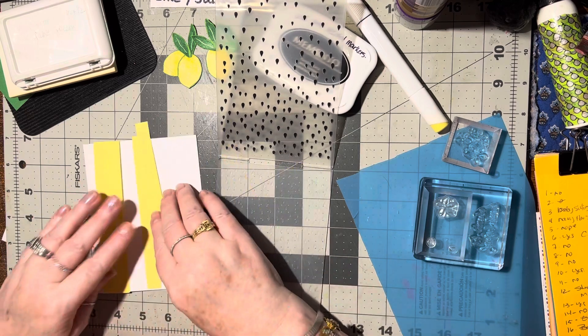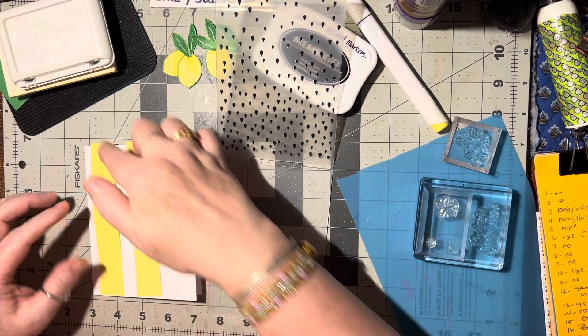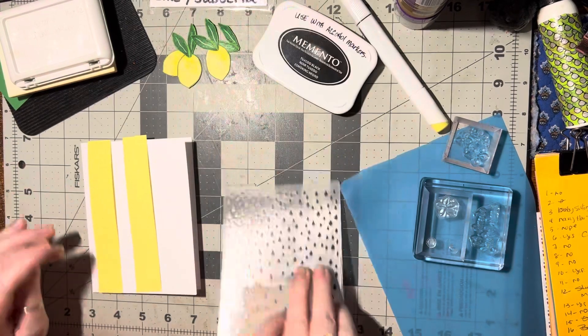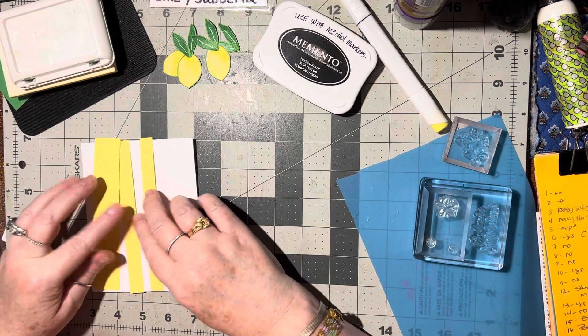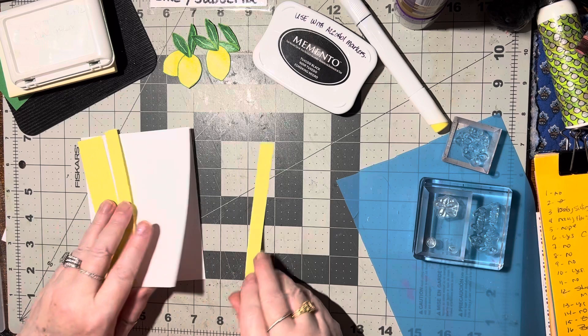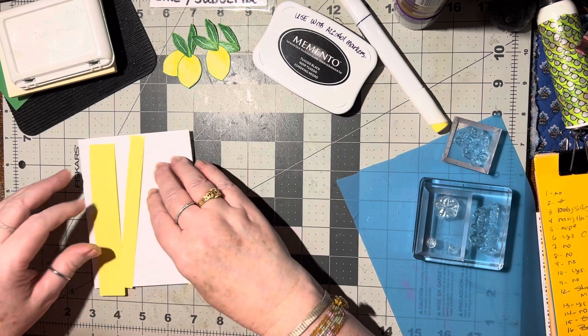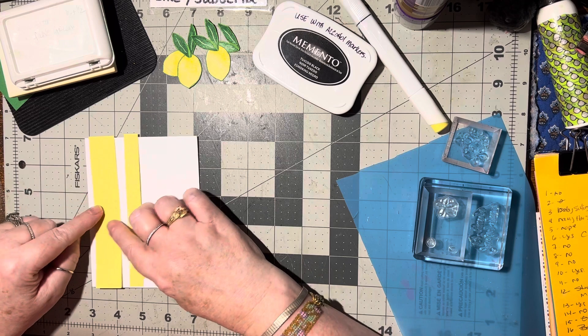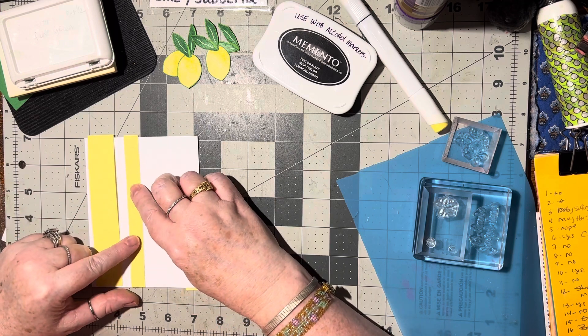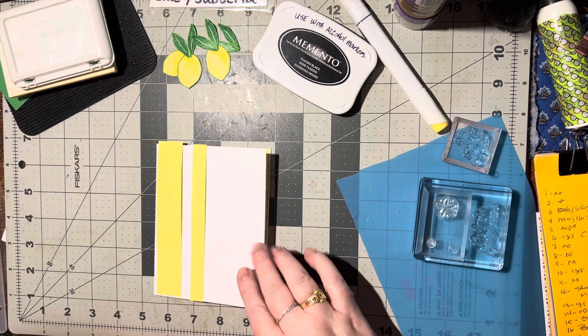You need two pieces that are one inch wide by five and a half inches long so it'll fit on your card front. Then one of the pieces you cut in half lengthwise because one piece is going on the inside. So half an inch by five and a half, one inch by five and a half.